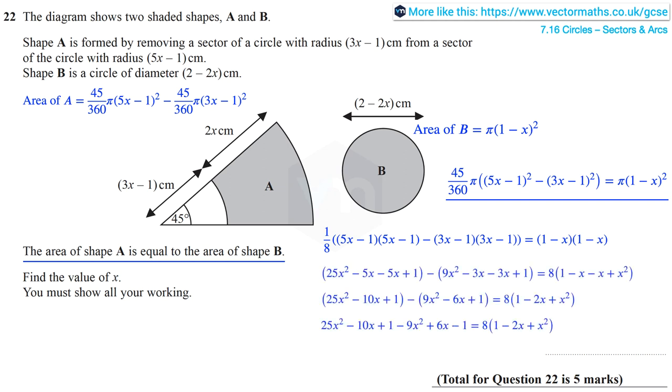After several steps, we can see that 16x squared minus 4x equals 8 minus 16x plus 8 squared. And therefore we have the quadratic 8x squared plus 12x minus 8 equals 0. And we can divide through by 4 to get 2x squared plus 3x minus 2 equals 0.